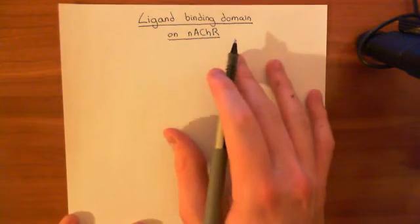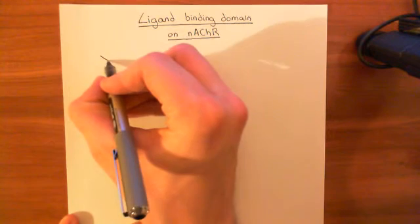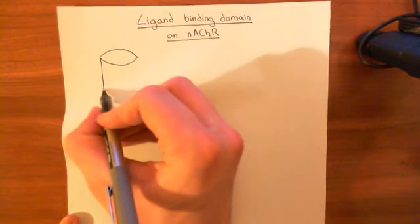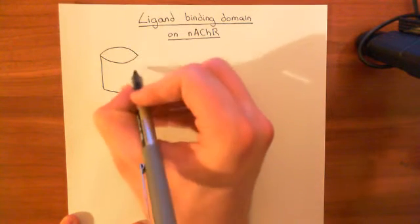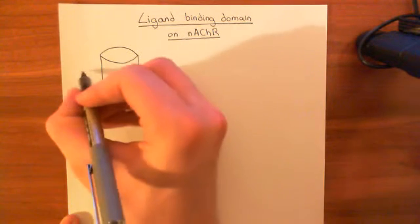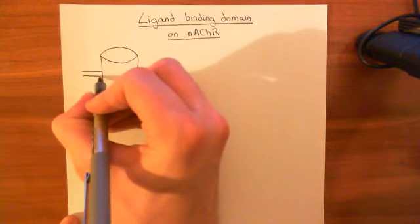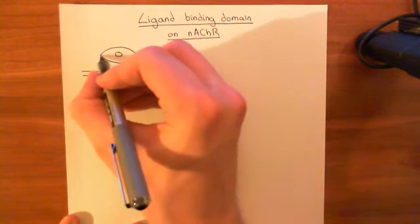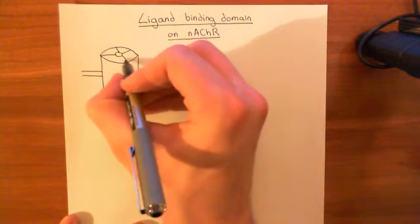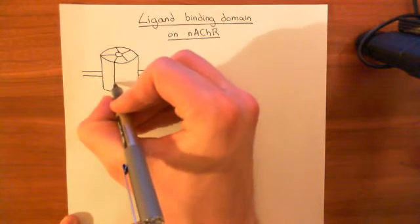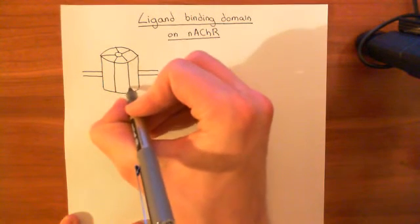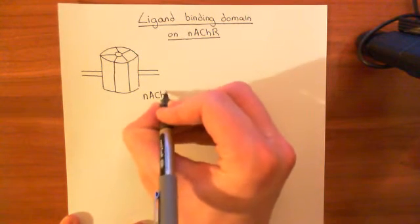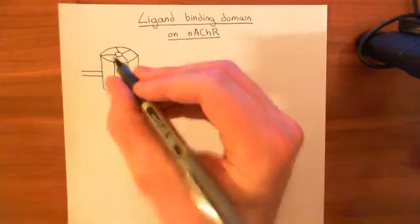Let's start off with a discussion of the nicotinic acetylcholine receptor. The nicotinic acetylcholine receptor is a ligand-gated ion channel, and it consists of five subunits. This is the whole structure here — it's an ion channel made out of five separate protein subunits which make up the nicotinic acetylcholine receptor.